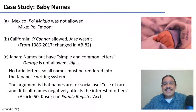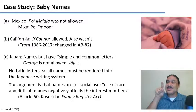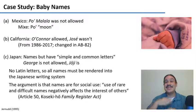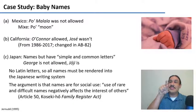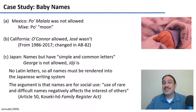A very interesting short case study is baby names, because names are in languages. In Mexico, there was a small scandal in the state of Oaxaca because a family tried to name their baby Po' Malala — 'Po'' means 'moon' in Mixe, one of the languages of Oaxaca — but the name has an apostrophe representing a glottal stop, which the registry system couldn't accept because it only took Roman letters. In California for a long time, names could have an apostrophe but couldn't have an accent mark like in 'José.' For about 30 years California had an English-only law, which was repealed in 2017, so now you can name a baby with an accent mark in California.